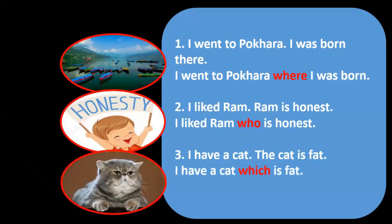In these three examples, in question number one we have 'where' connecting two sentences. In number two we have 'who' connecting two sentences. And we have 'which' connecting two sentences in number three. So where, who, which — they are the relative pronouns. And 'where I was born,' 'who is honest,' and 'which is fat' — they are examples of Relative Clause.